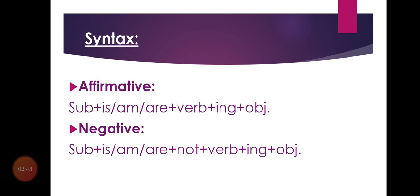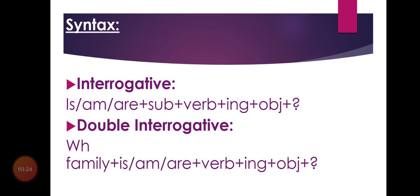Here is the syntax. In the affirmative structure: Subject + is/am/are + Verb ING + Object. Remember: with he, she, it we use 'is'; with all plural subjects we use 'are'; and with 'I' only we use 'am.' For negative, simply add 'not.' For interrogative, start with is/am/are, then subject, then Verb ING + object + question mark. Double interrogative: WH-word + is/am/are + Verb ING + object + question mark.